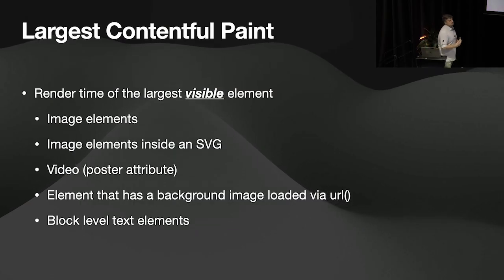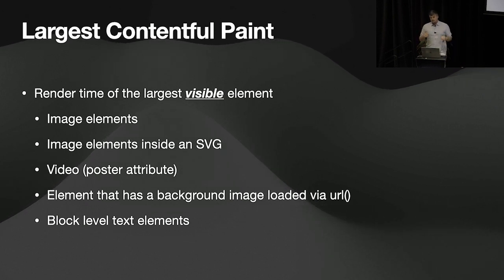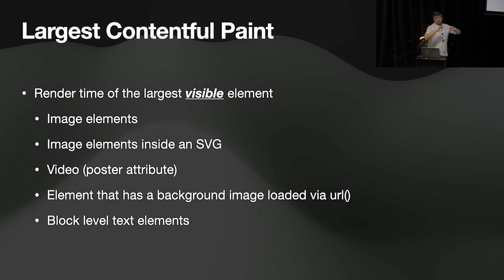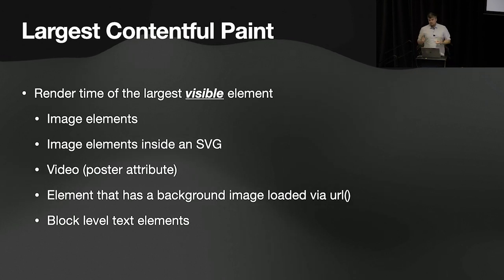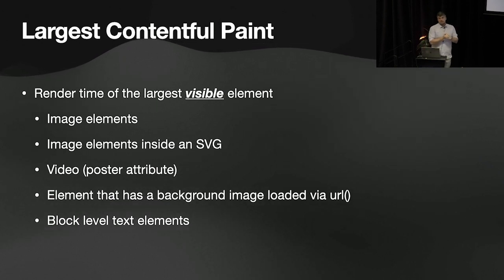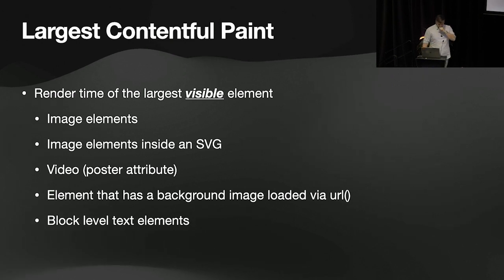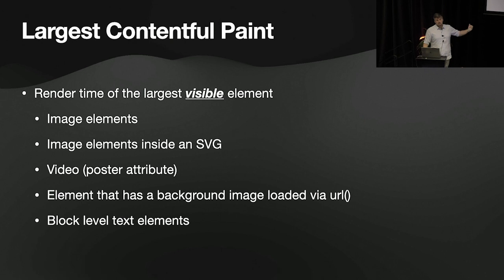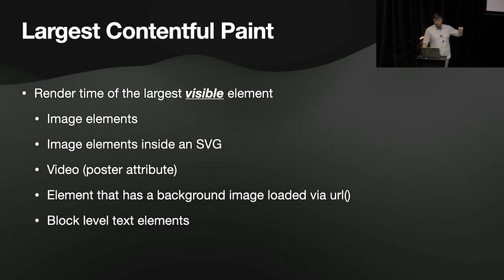LCP measures the render time of the largest visible element above the fold. The elements it measures include: image elements, images inside an SVG, video elements — but only if the video element has a poster attribute — and elements with a background image loaded via the URL property. If there are no images in the visible first load, it measures how long block-level text elements like H1 or paragraph tags took to render.